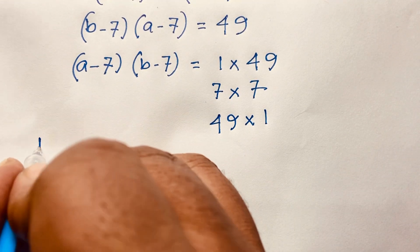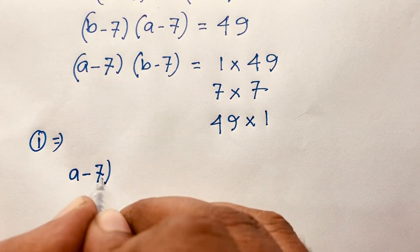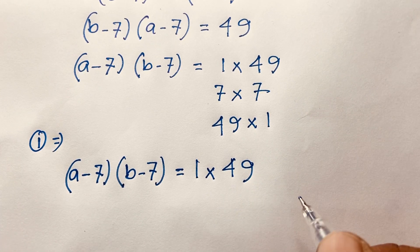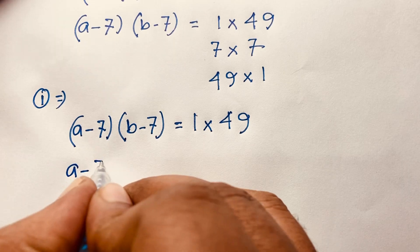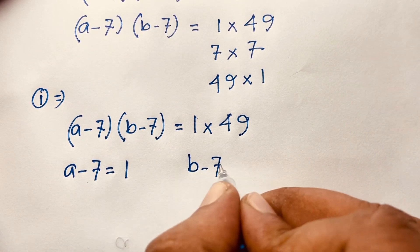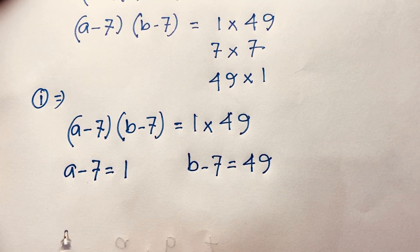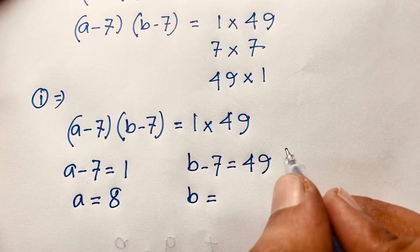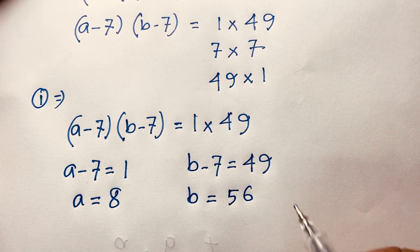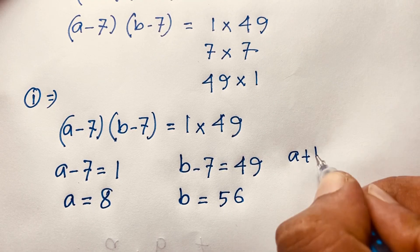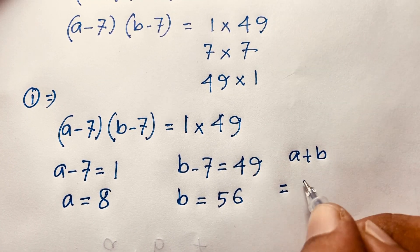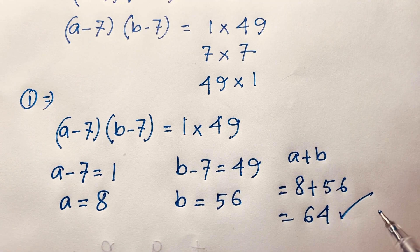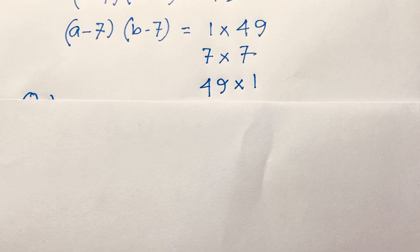Case 1: (a minus 7)(b minus 7) = 1 times 49. So a minus 7 equals 1 and b minus 7 equals 49, giving a equals 8 and b equals 56. Therefore a plus b equals 8 plus 56, which is 64.